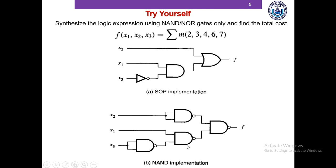The total cost is the total number of gates plus the total number of inputs to gates. The circuit has 4 gates, and the total number of inputs to gates is 8. So the total cost is 12 in this circuit.